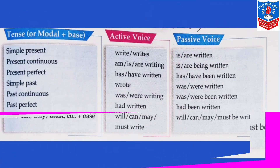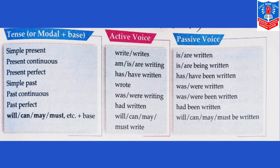Moving on to the next topic. Here, tenses or modal plus base form are given in the first column, active voice in the second column, and the third column shows passive voice. If simple present tense is given and the active voice has the verb 'write' or 'writes', we will change it to 'is or are written' in passive voice. Next, if it is present continuous tense and the active voice has 'am/is/are writing', we will change it to 'is or are being written'.